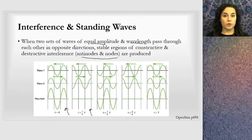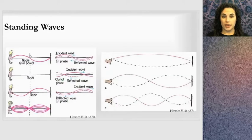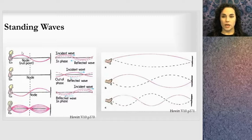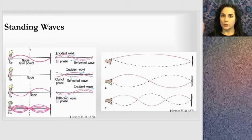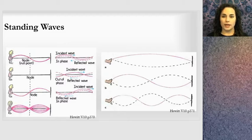Let's look at nodes and antinodes in more detail. A girl at the end of a string is waving it up and down. Each point along the string just moves up and down, reaching a maximum value, something in between, then falling to zero and a negative maximum. She's going to wave it at a regular frequency.